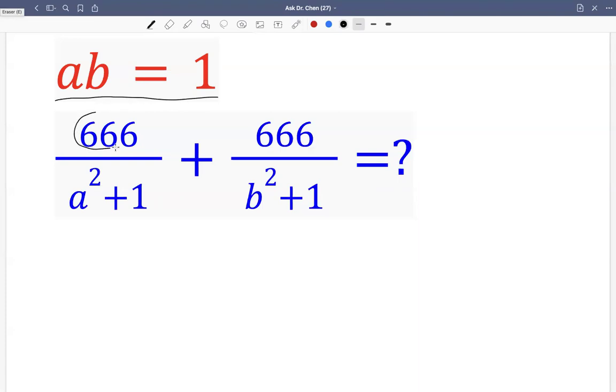First we observe 666 is a common factor. So we can factor 666 outside the calculation. Now we have 1 over A squared plus 1.